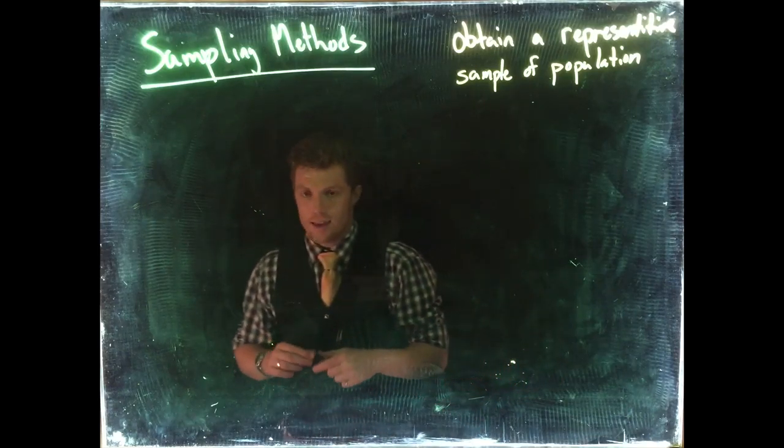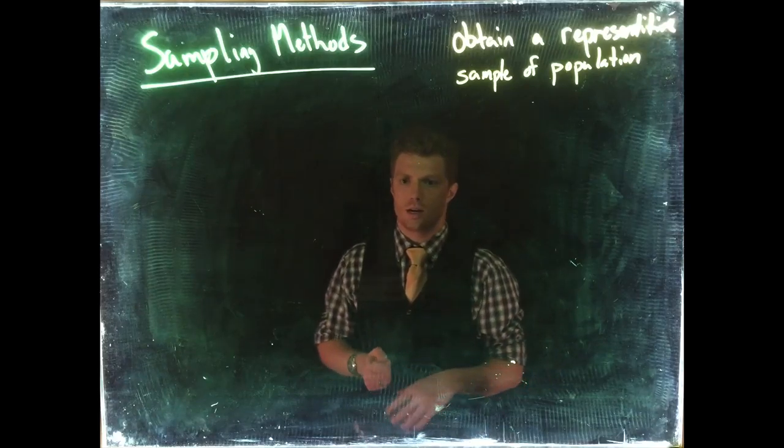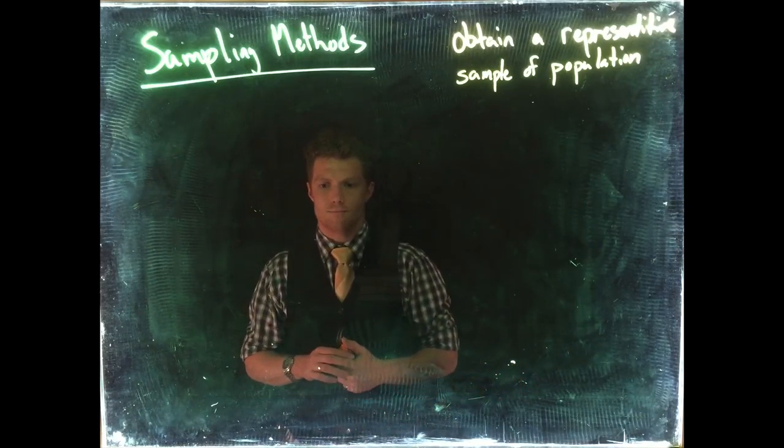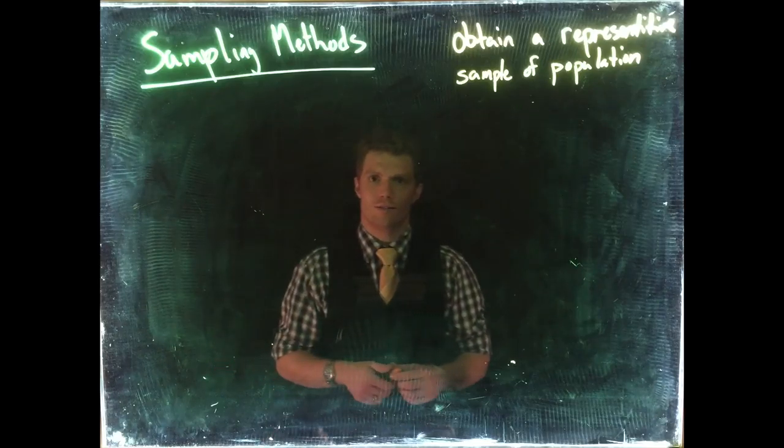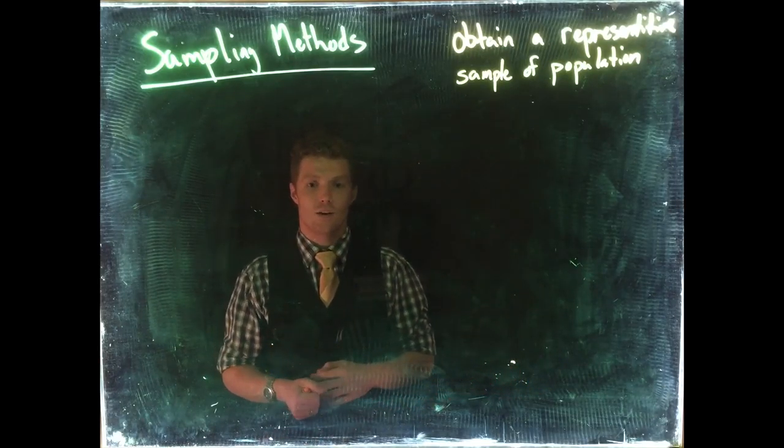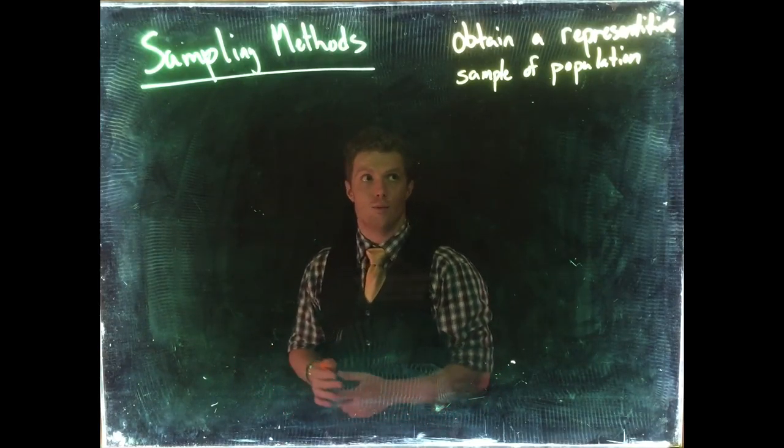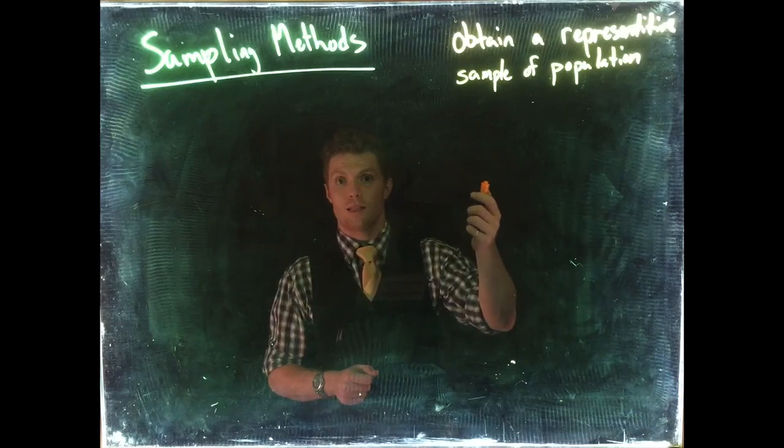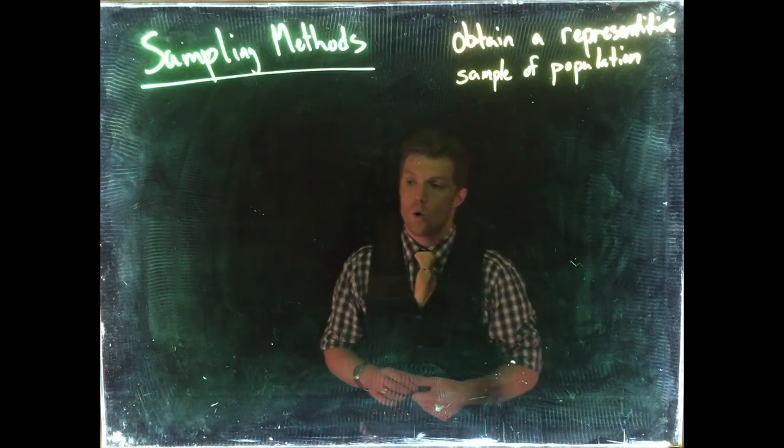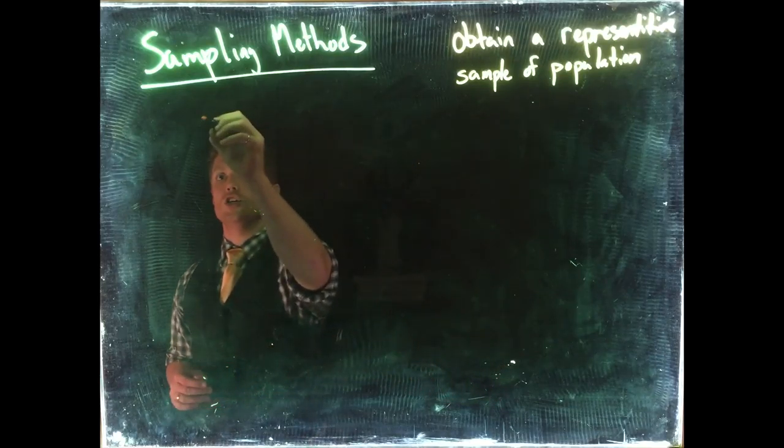As we found out from reading some of our books, we talked about the fiasco of the sampling that the Literary Digest did in 1936. They took a huge sample, but because it was not representative of their population, the conclusions they made were erroneous.